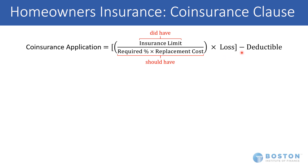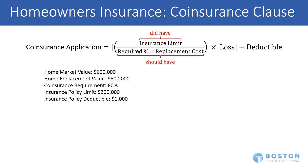That amount is then multiplied by the loss that's been incurred, and then the deductible is subtracted. Now, this is different than what we're used to in a health insurance policy, where we take the deductible off the top. In the homeowner's insurance policy, that comes off of the back end.